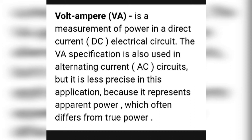In an AC circuit, volt-ampere is designed for apparent power, but there is also reactive power — lagging power — so the volt-ampere value does not give accurate results. In AC, it is mainly used for specification and is especially designed for DC current. Thanks for watching — please subscribe to our channel to watch more videos like this.